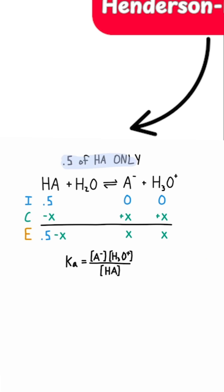You want to use an ICE table any time you have a weak acid in solution and nothing else. So there's no conjugate base in solution, only the weak acid. And when that's the case, you use an ICE table.